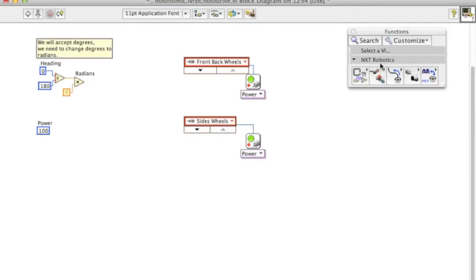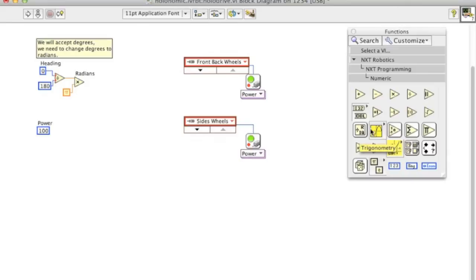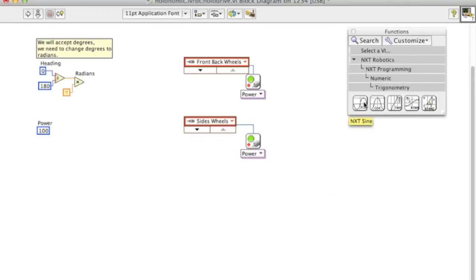Now we want to find the sine of those radians, the sine of that angle, and give it to the front and back wheels. And we want to give the cosine to the side wheels.